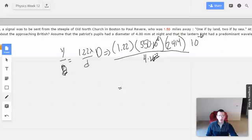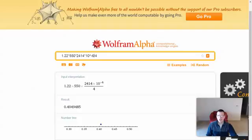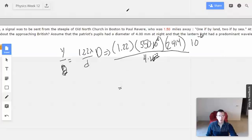Does that feel right? 1.22, 550, 2414, divided by 4.